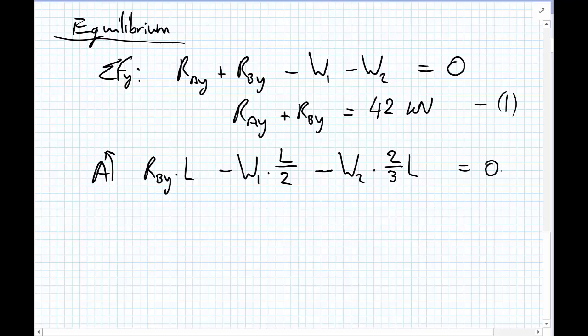So I can substitute the known values in there and take these negative quantities onto the right hand side, so I have 6RBY equals 24 multiplied by 3, so that's this term, and then plus 18 multiplied by 4. I'll put this into the calculator and divide all of this right hand side by 6, and I get RBY equals 24 kilonewtons.